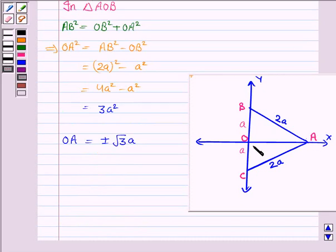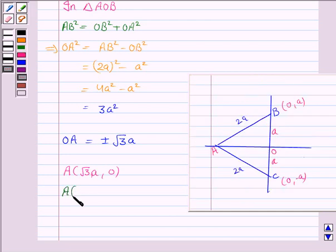Since A lies along the x-axis, the y-coordinate must be 0. The coordinate of A will be (root 3a, 0) if A lies to the right side of y-axis, and the coordinates of A will be (-root 3a, 0) if A lies to the left side of y-axis.